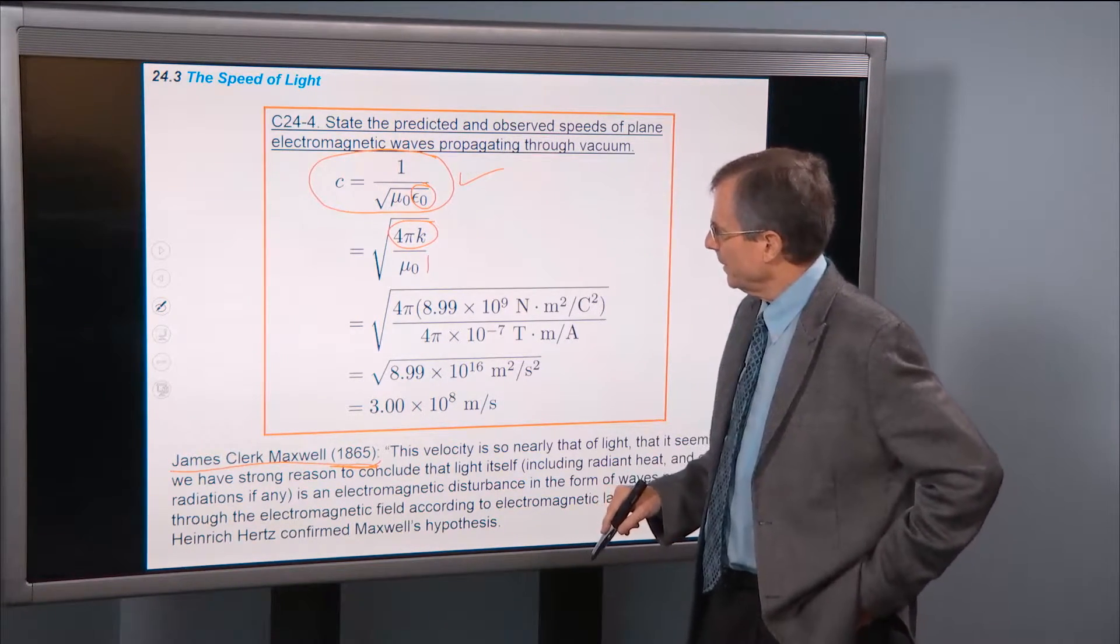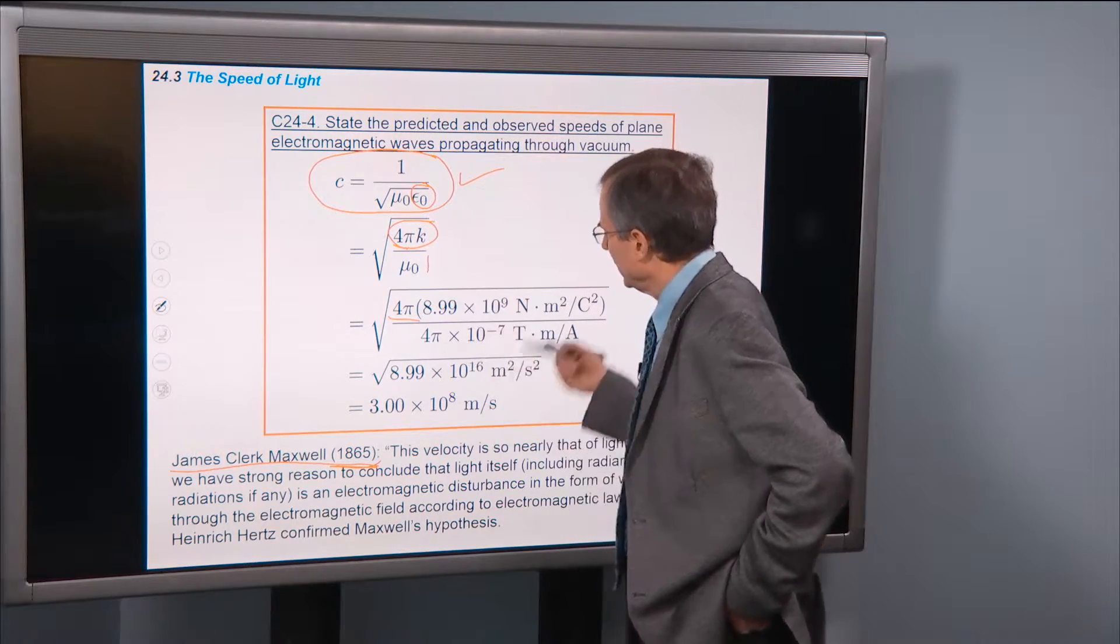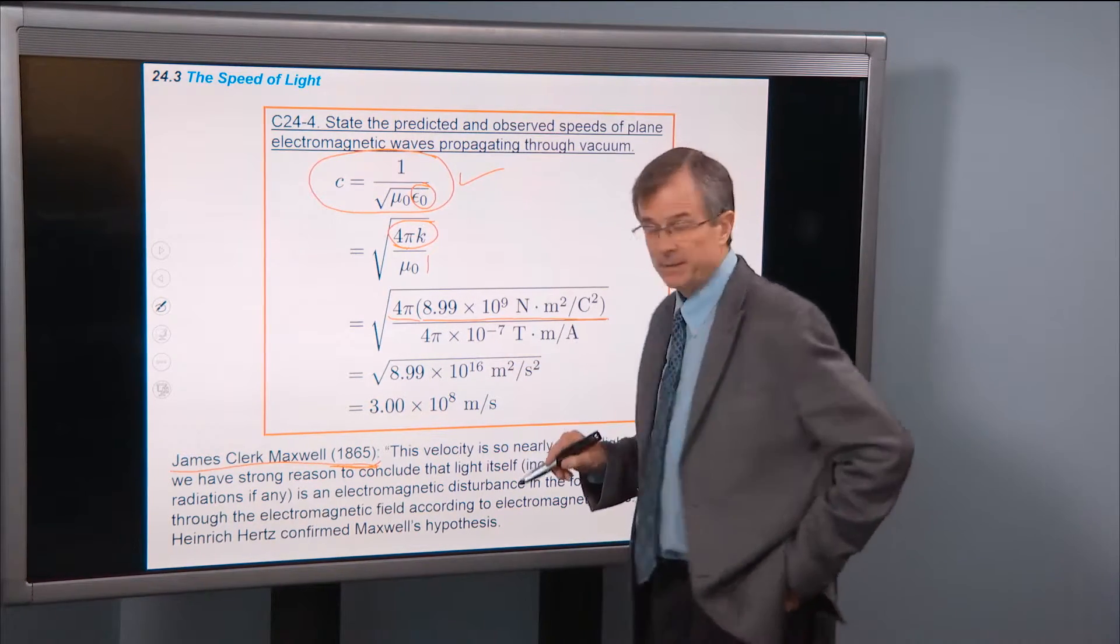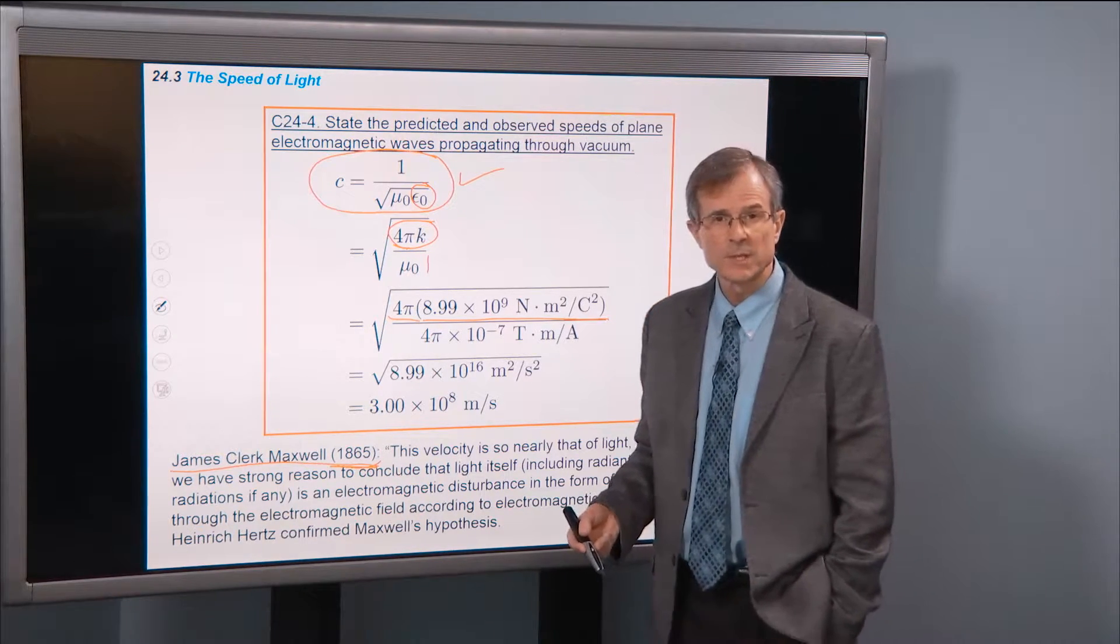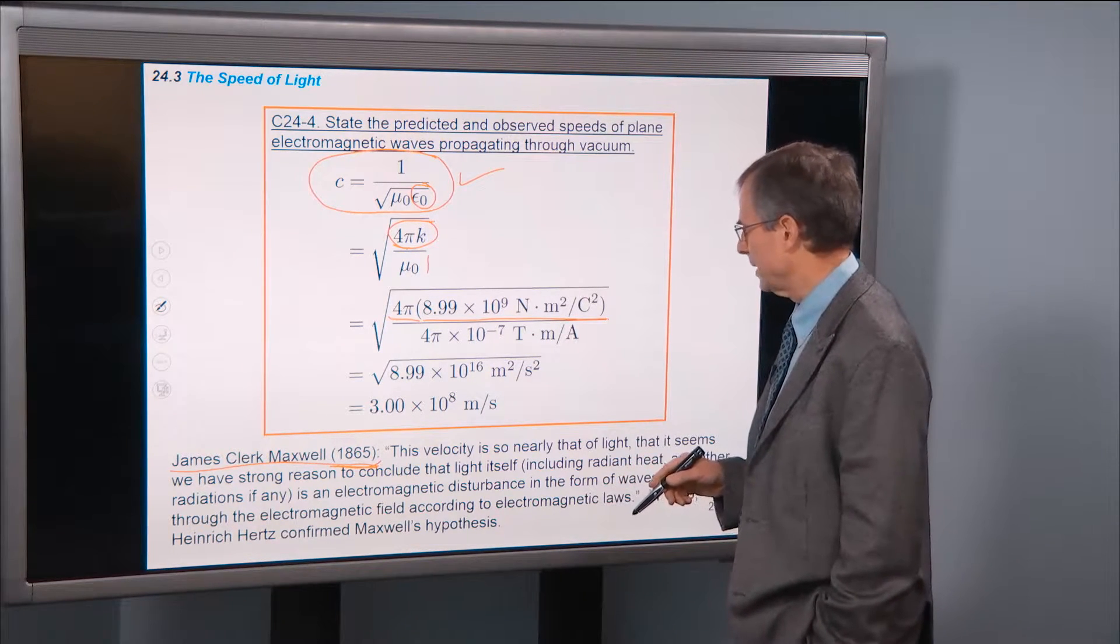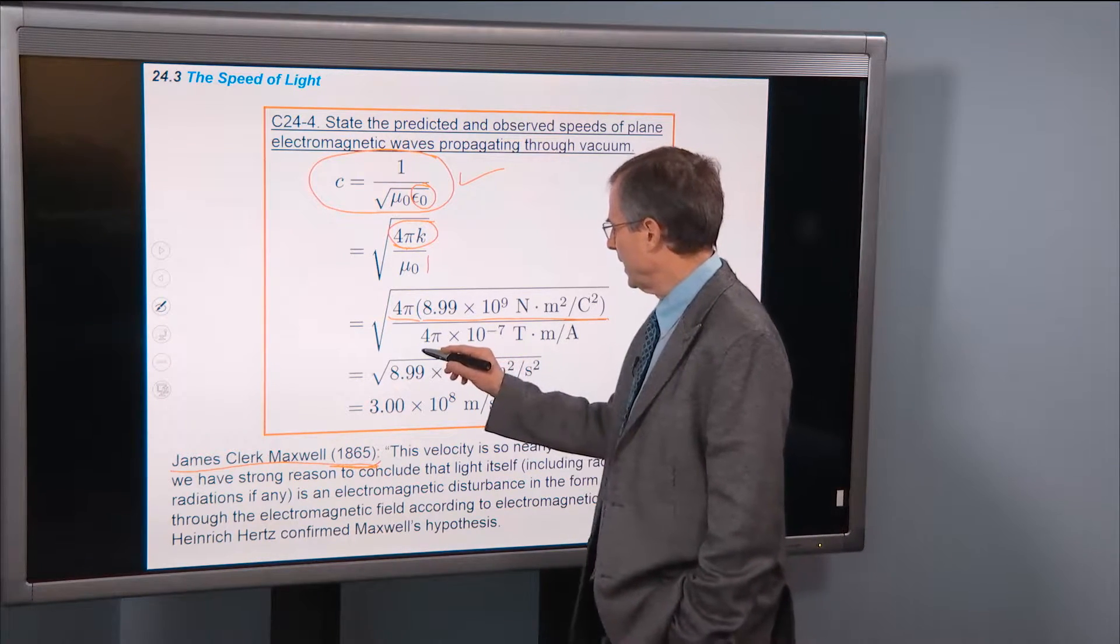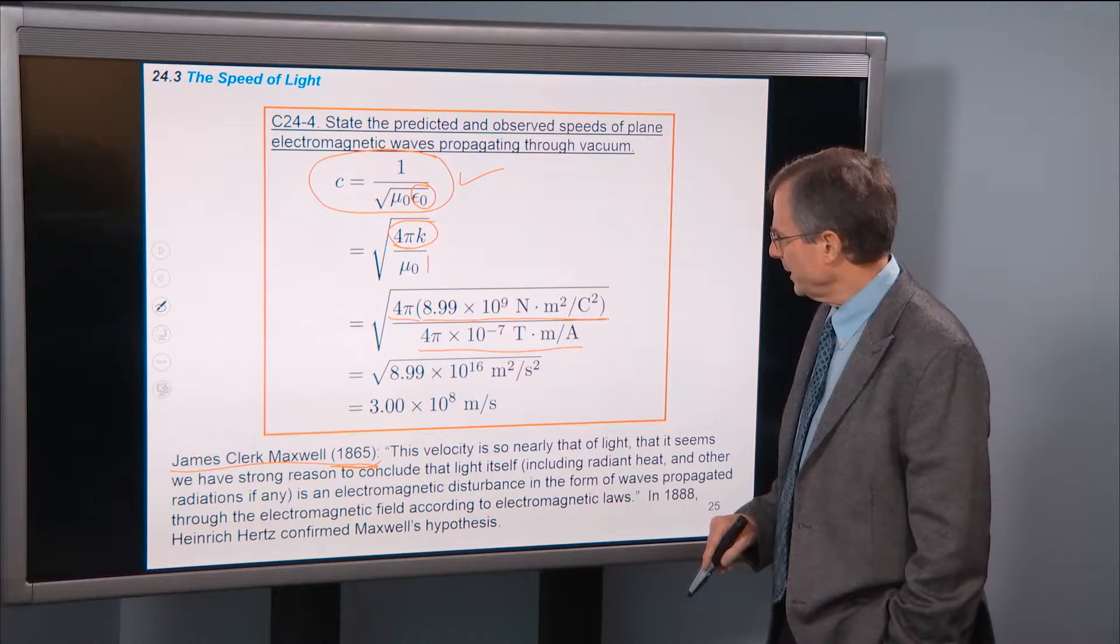Well, we can plug in the numbers. 4π, there's the 4π here. k is about 9 times 10 to the 9. That's that Coulomb force constant, which is one of the very first constants that we learned this semester. 9 times 10 to the 9 newton meters squared per Coulomb squared. And then mu-naught, 4π times 10 to the minus 7 tesla meters per amp. Well, what do we get?